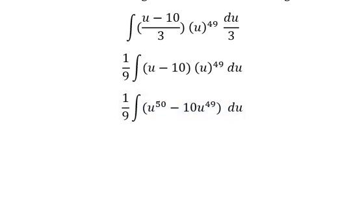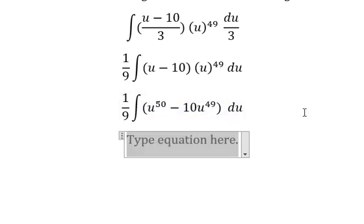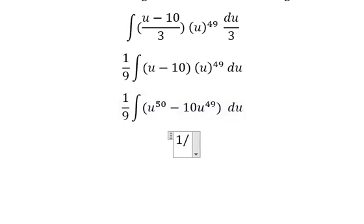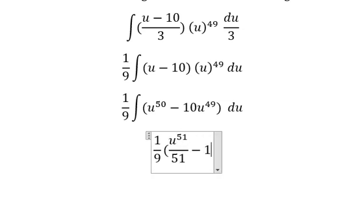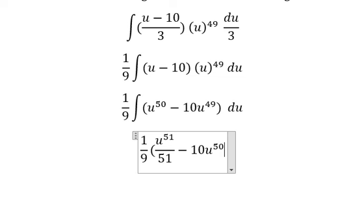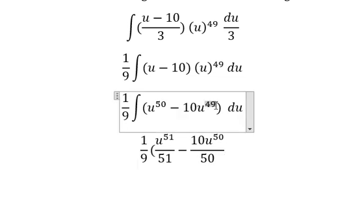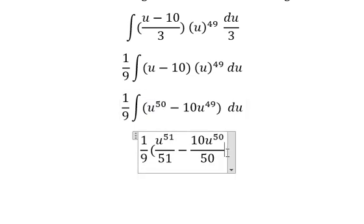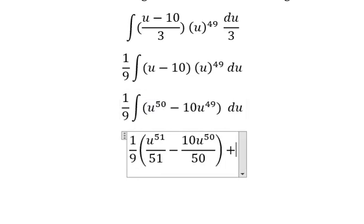The integration of this one we have u to the power of 51 over 51. This one we have u to the power of 50 over 50. That's 49 plus 1, you got 50 in here. Similar for this one. And we put c.